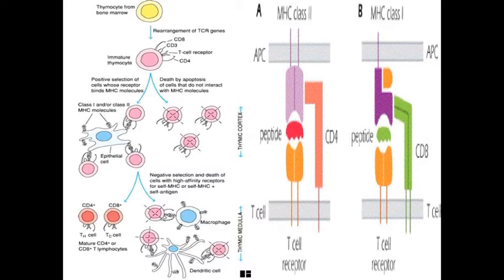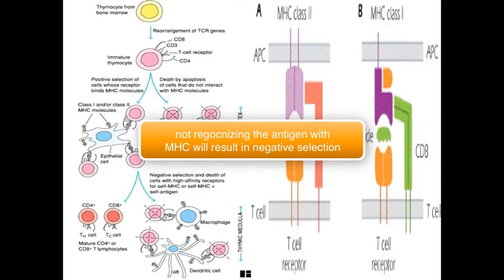So how does the selection go? When the T-cells enter the thymus, all of these stromal cells will express the antigen through help of MHC. One of the factors that will determine if these will undergo a positive selection is that if they can recognize the MHC with its antigen, if they cannot, they will undergo apoptosis.